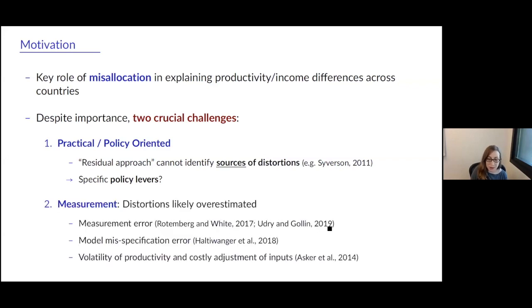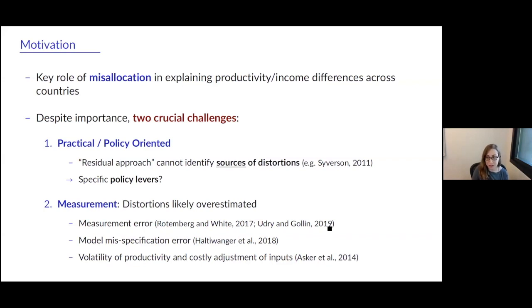The second challenge has to do with measurement. If we attribute all cross-sectional variation in marginal revenue products of inputs to misallocation, any measurement error or model misspecification causes the absorbed variation in marginal revenue returns to be bigger than the real variation, inflating how much misallocation we think exists. That also inflates how much we think aggregate productivity will improve if we reduce misallocation — making it very difficult to quantify the effects even when we identify a policy that can reduce misallocation.